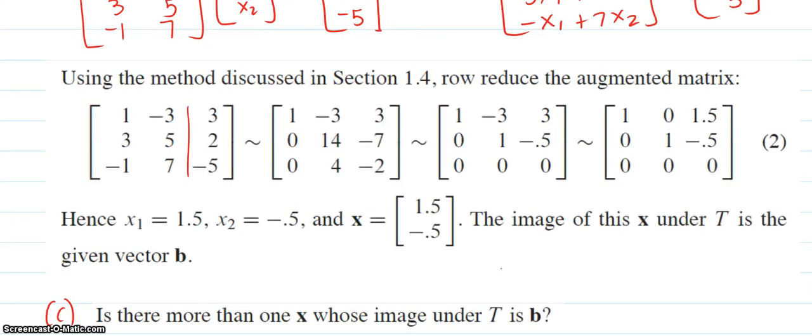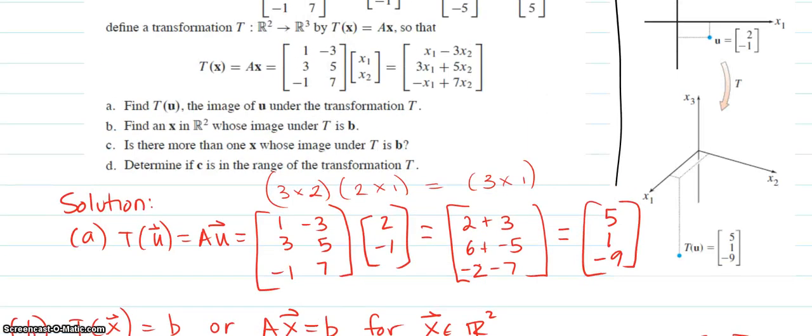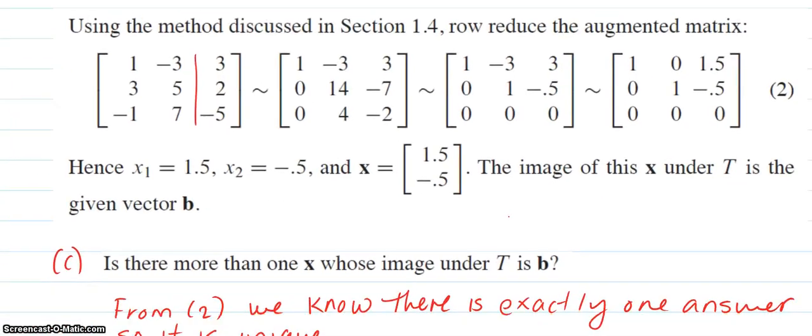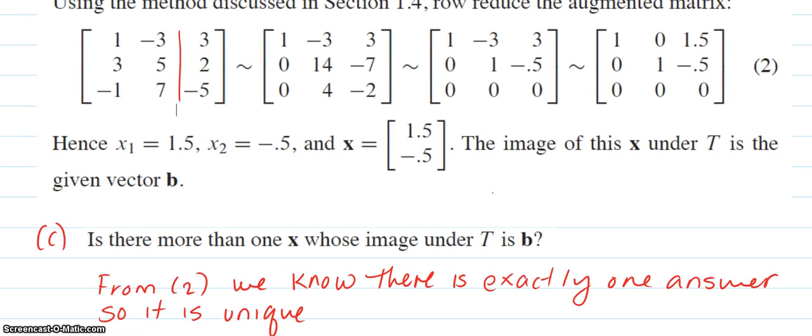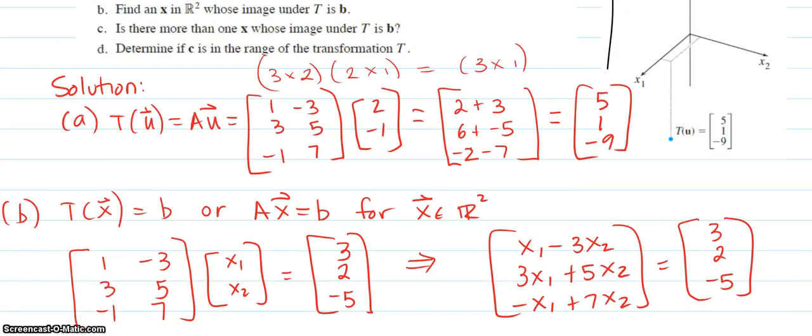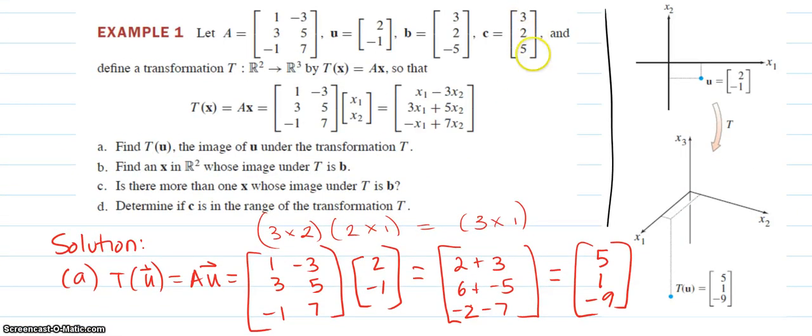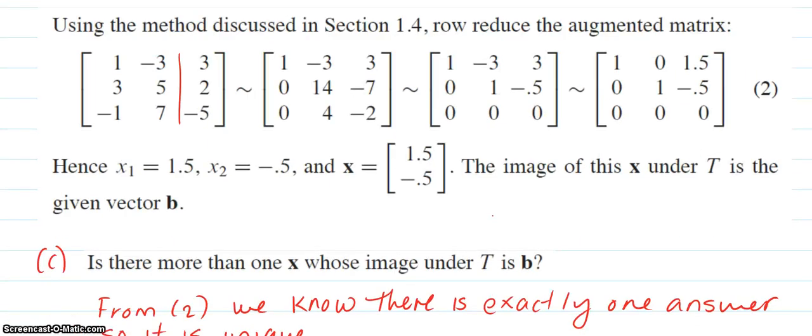Part C asks: is there more than one x whose image under T is b? If you go back up and look at c, that was what the question was. And what's the answer? Well, we know that from part b, equation 2, we know that there's exactly one answer. Here it is. So it is unique, and there is more than one—yes. Part d: Determine if c is in the range. And if you look up, c is 3, 2, 5 instead of 3, 2, negative 5. So let's go ahead and do that here.